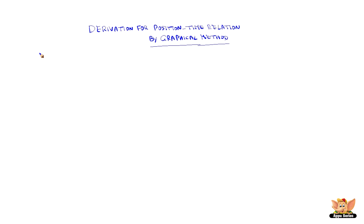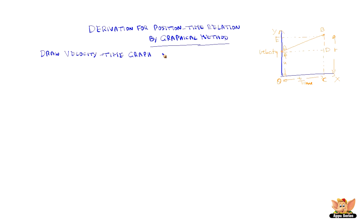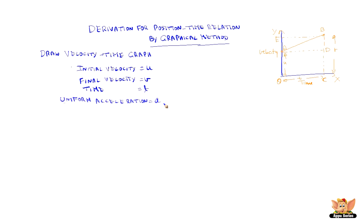Derivation for the position-time relation by graphical method. We draw a velocity-time graph to do the derivation. From the graph, we understand that the body moves with initial velocity u and final velocity v, and the time it takes is t, at uniform acceleration a.